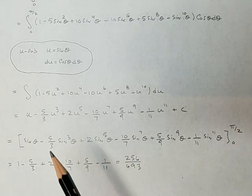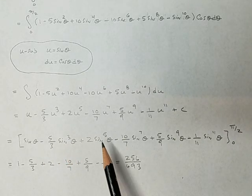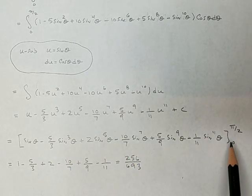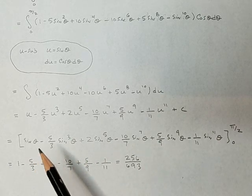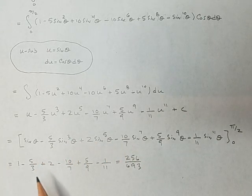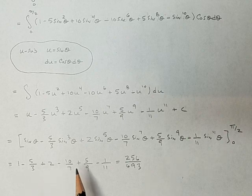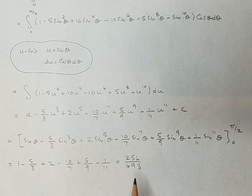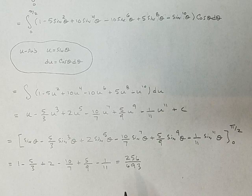So this one, not too bad. Sine of pi over 2 is going to be 1, and sine of 0 is going to be 0. So you're just going to get the coefficients there, which if you combine, add, and subtract all those together, you'll get 256 over 693. That's the same answer that we got when we used Wallace's formula.